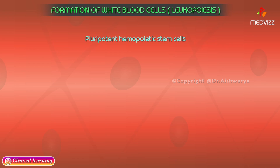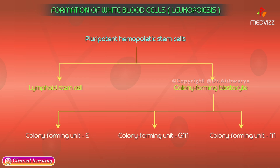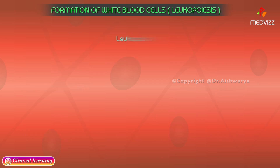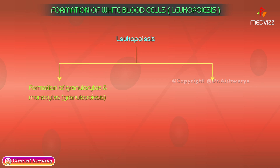All blood cells develop from the so-called pluripotent hematopoietic stem cells. After a series of divisions, these stem cells differentiate into progenitor cells, which are also called colony forming units. Leukopoiesis can be discussed under two headings: formation of granulocytes, known as granulopoiesis, and formation of lymphocytes, known as lymphopoiesis.